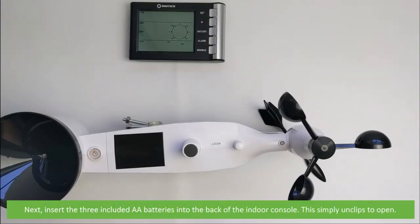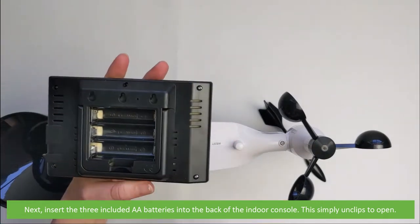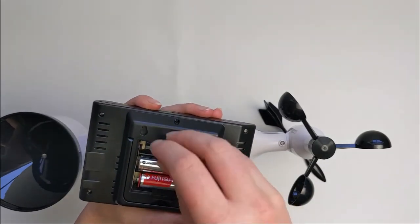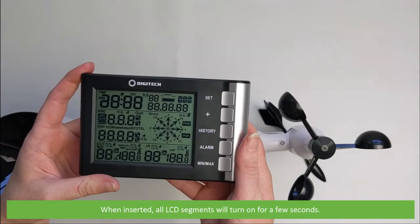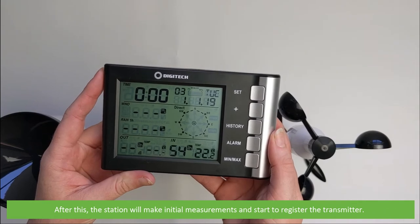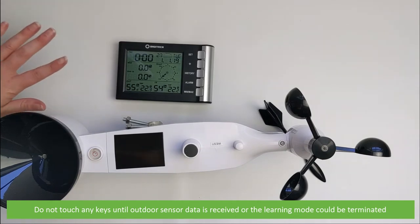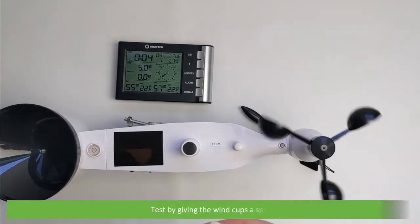Next, insert the three included AA batteries into the back of the indoor console. The battery lid simply unclips to open. When inserted, all LCD segments will turn on for a few seconds. After this, the station will make initial measurements and start to register the transmitter. Do not touch any keys until outdoor sensor data is received or the learning mode could be terminated. When the outdoor transmitter has been registered, the base station will automatically start updating. Test by giving the wind cups a spin.